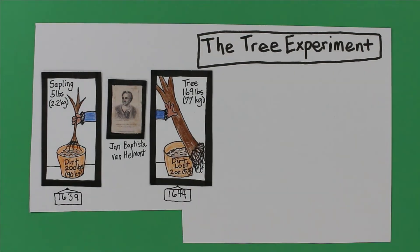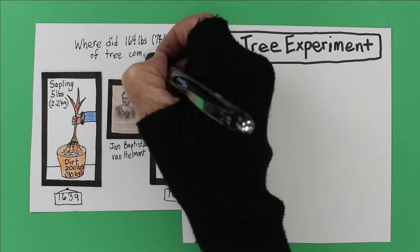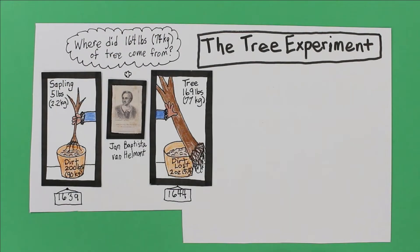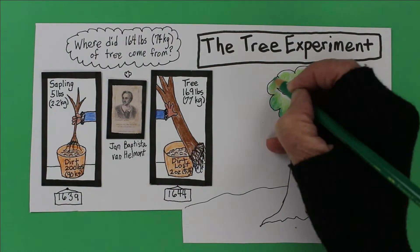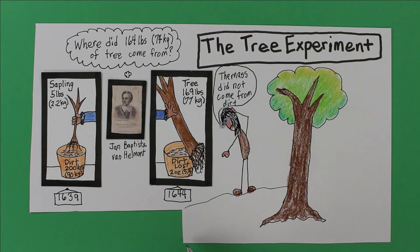At the end of five years, he pulled the tree, dried it, and weighed it. The tree weighed 169 pounds or 77 kilograms. But the dried soil had lost only 2 ounces or 57 grams. That's 164 pounds of wood, bark, and roots that wasn't from the soil. So where did it come from?